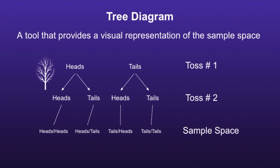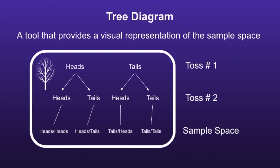A tree diagram is a tool that provides a visual representation of the sample space. They call it a tree diagram because the arrows are similar to the branches on a tree. If you look at the bottom of the tree diagram, you will see that same sample space as before.